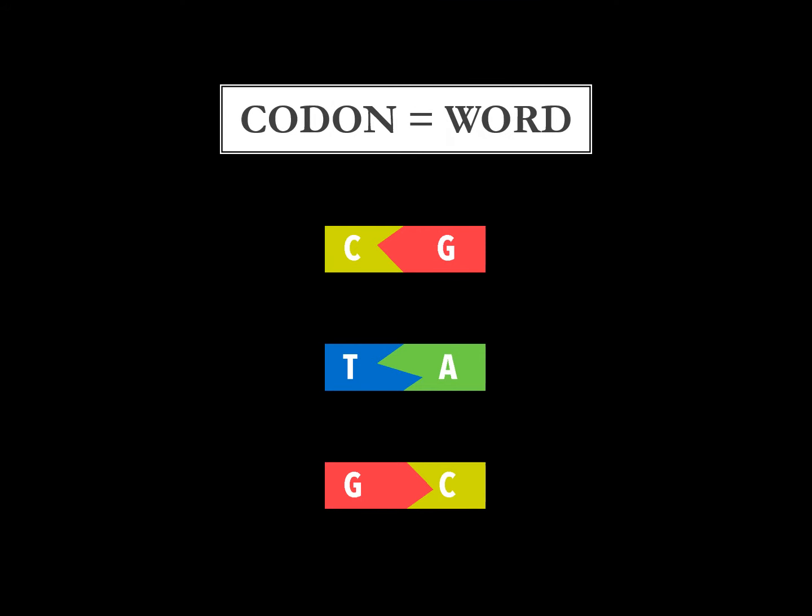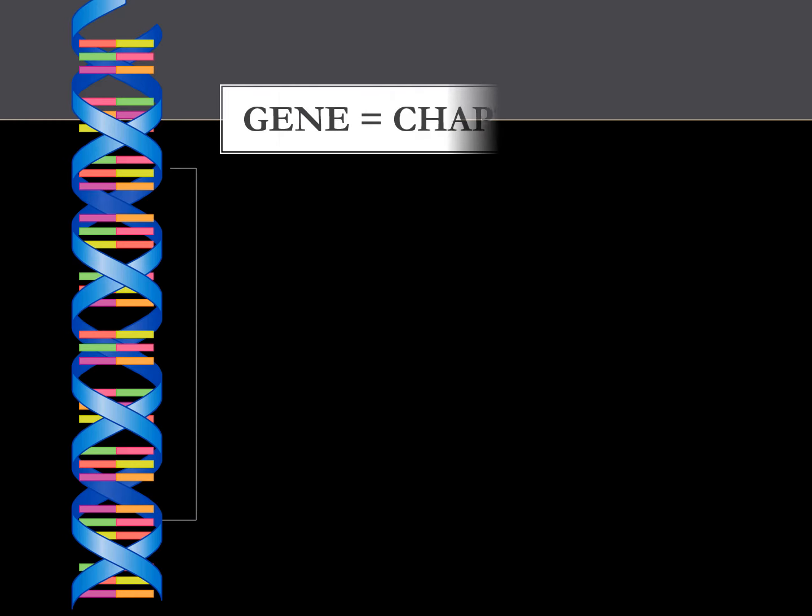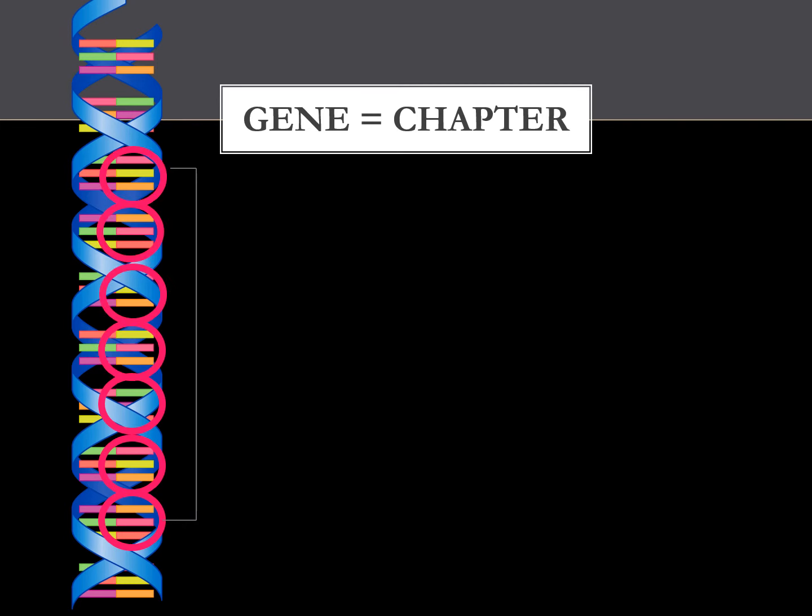Three bases in a row make up a codon, which you can think of as a three-letter word. A certain sequence of codons, which may include dozens, hundreds, or even thousands of bases, is called a gene.